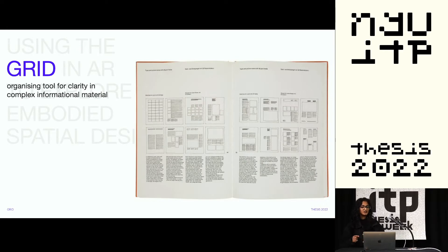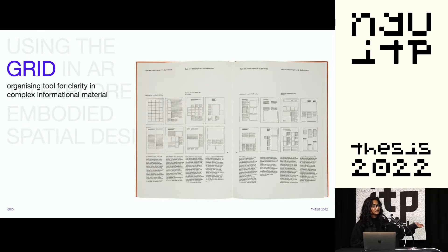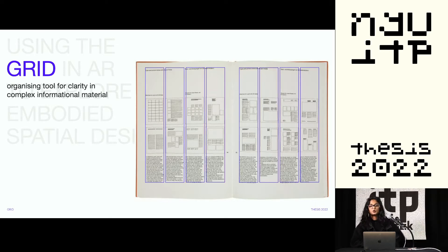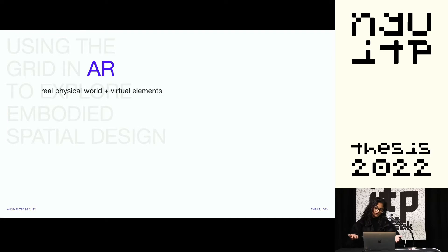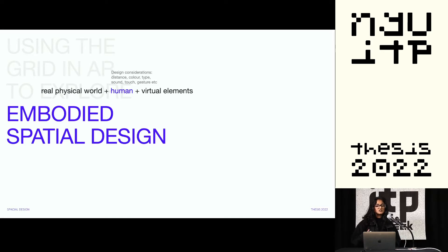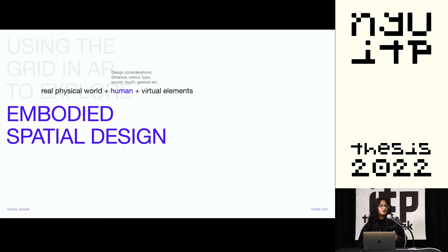The grid is a tool in graphic design used to organize complex information. On your right are a few examples of what a grid can look like. In fact, this book was made using a grid. So are my slides. Augmented reality is when you place virtual elements in a real physical environment. Embodied spatial design is when you design keeping in mind the human who has to experience it — so there are different considerations you need to make about the color, typography, material, etc.